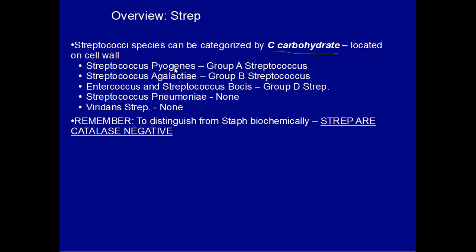Streptococcus pyogenes, which is known for causing strep throat or pharyngitis, is a group A streptococcus. Streptococcus agalactiae is a group B streptococcus and this is the number one cause of neonatal meningitis. Enterococcus and streptococcus bovis is a group D streptococcus. Streptococcus pneumoniae and viridans strep do not fall into this category. Streptococcus pneumoniae and streptococcus pyogenes are the most important, high yield.